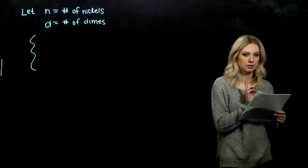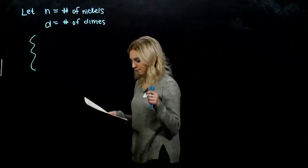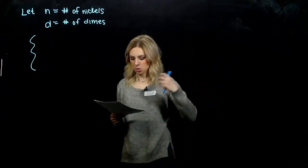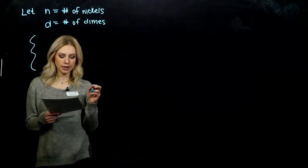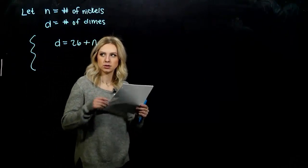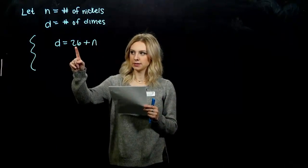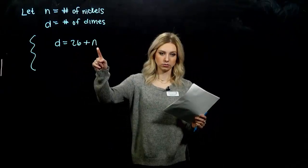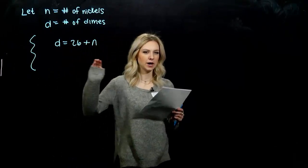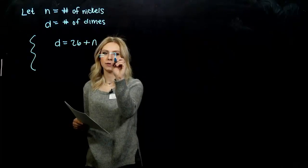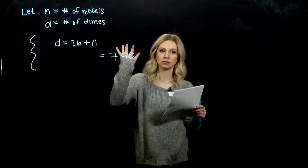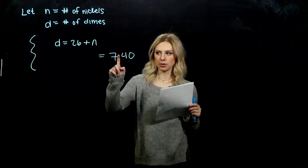The first piece: there are 26 more dimes than nickels. Do I have more dimes or more nickels? 26 more dimes. So my dimes are going to be more than my nickels. My dimes are going to be 26 more than the number of nickels: d equals 26 plus n. The other piece of information is the total price, $7.40.